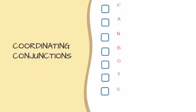Coordinating conjunctions are well known by the abbreviation FANBOYS. F is for 'for,' A is for 'and,' N is for 'nor,' B is for 'but,' O is for 'or,' Y is for 'yet,' and S is for 'so.'